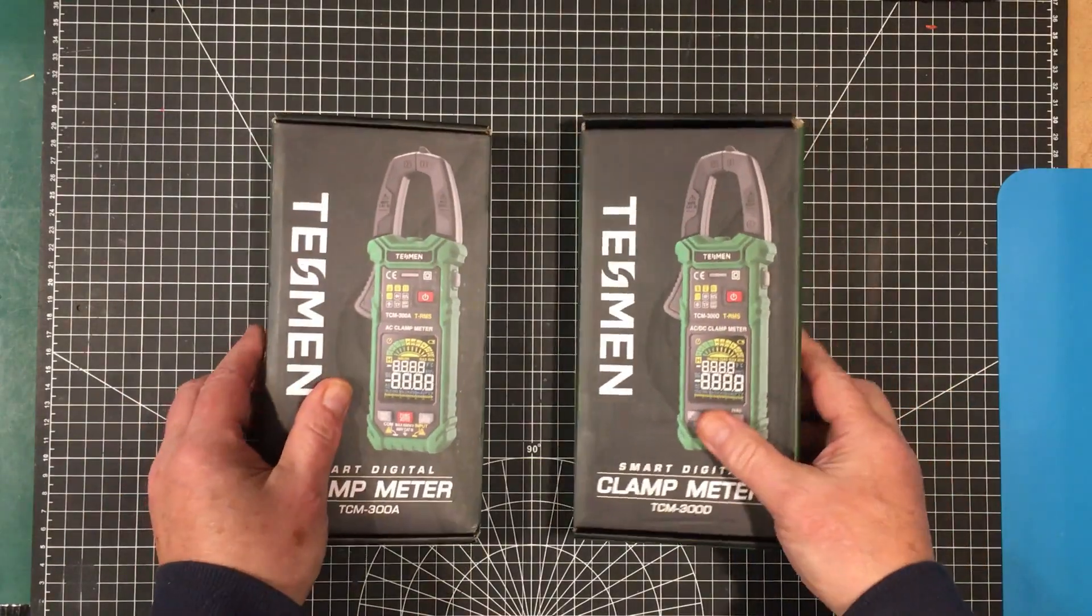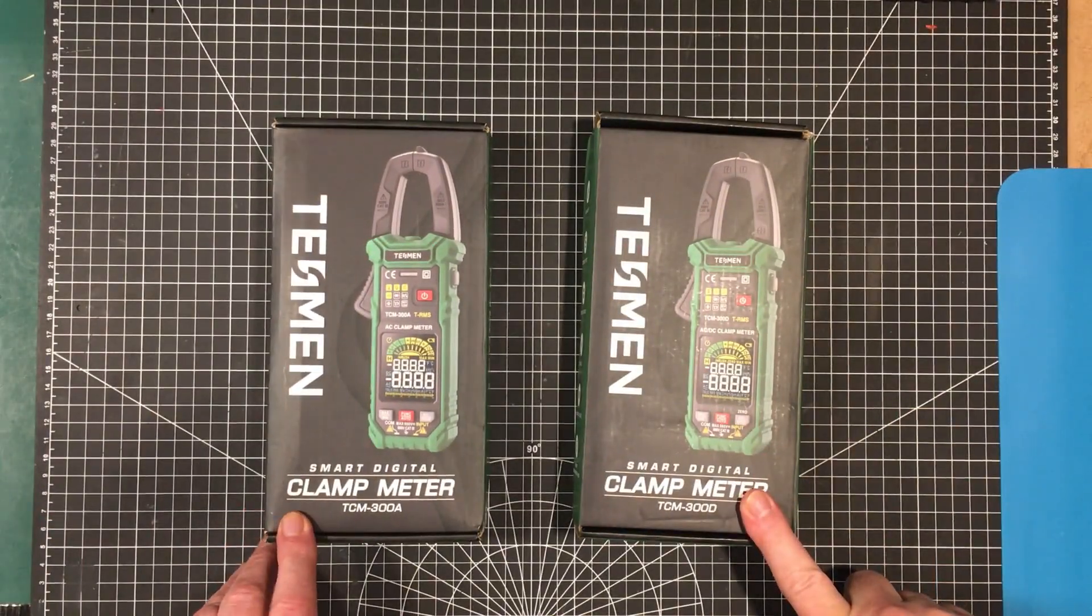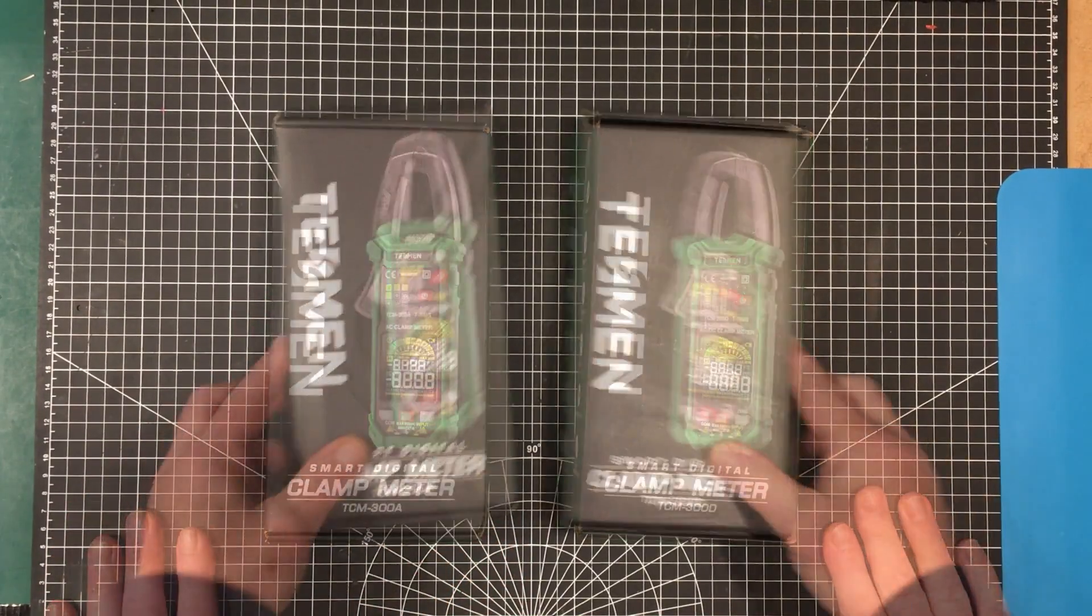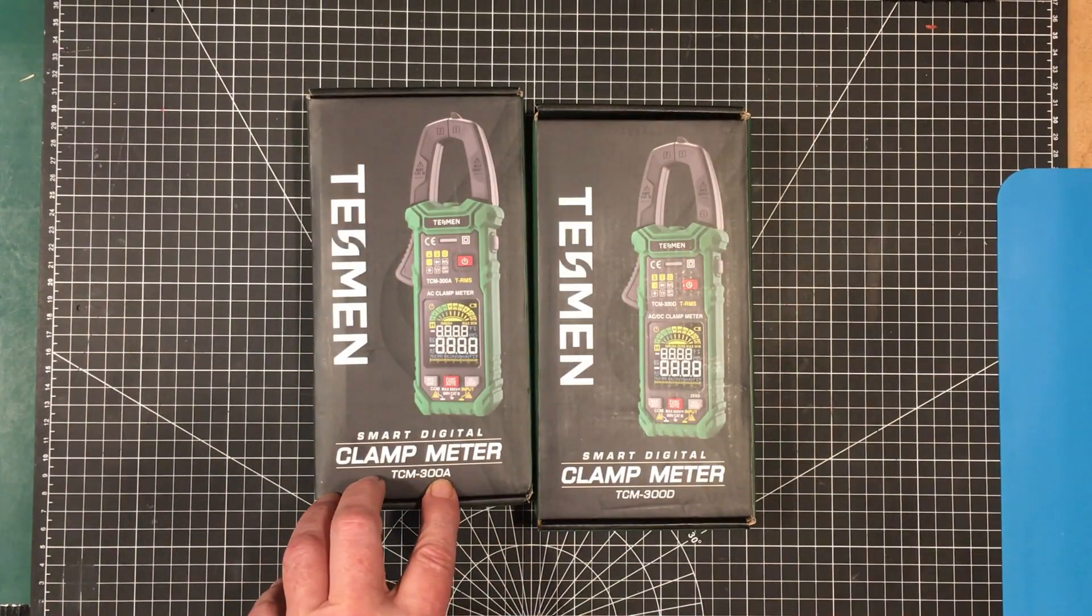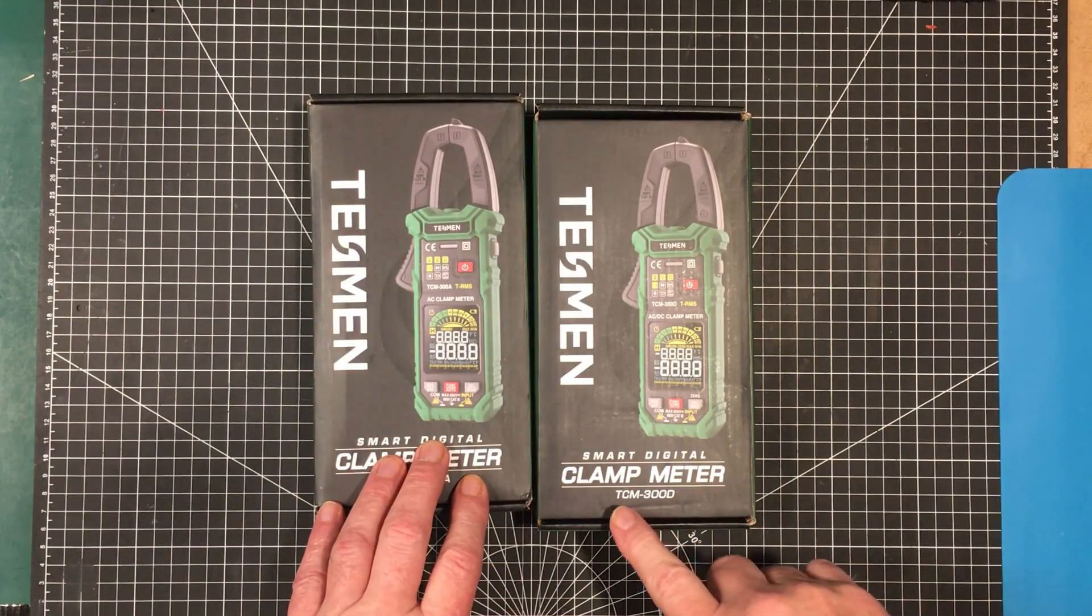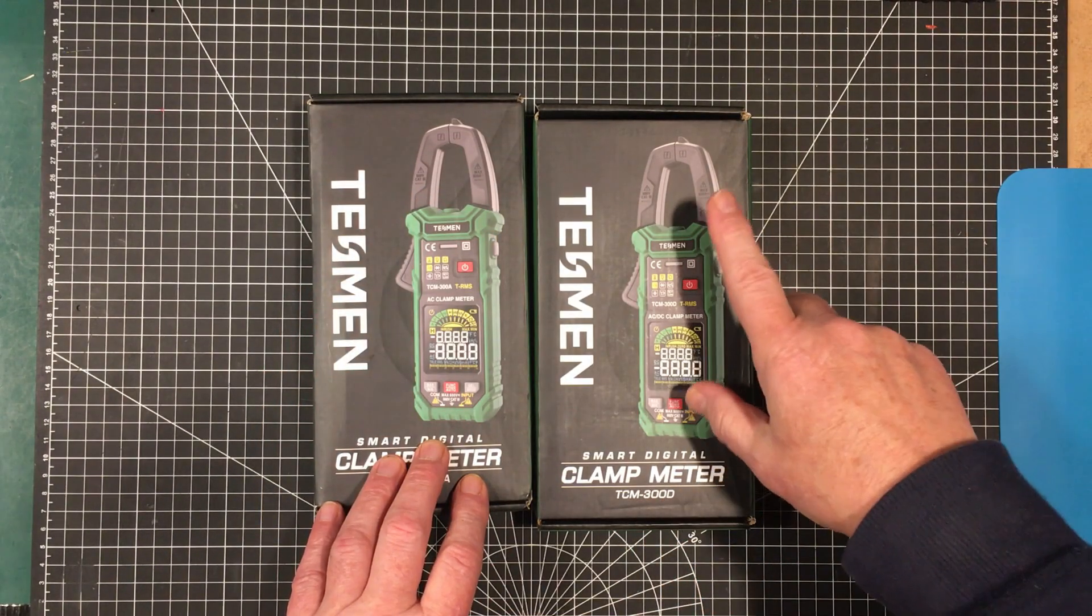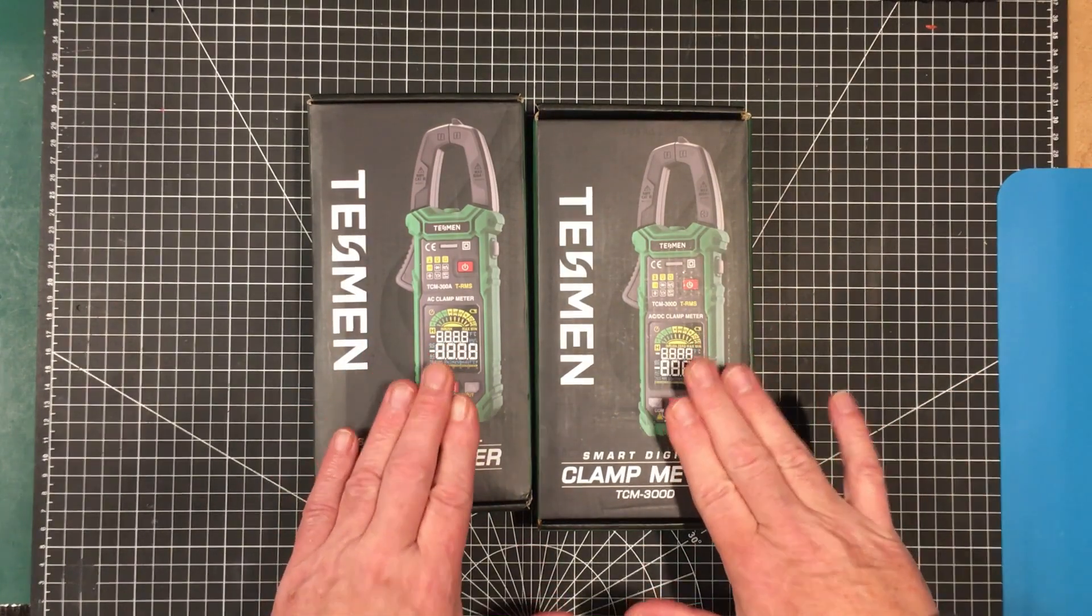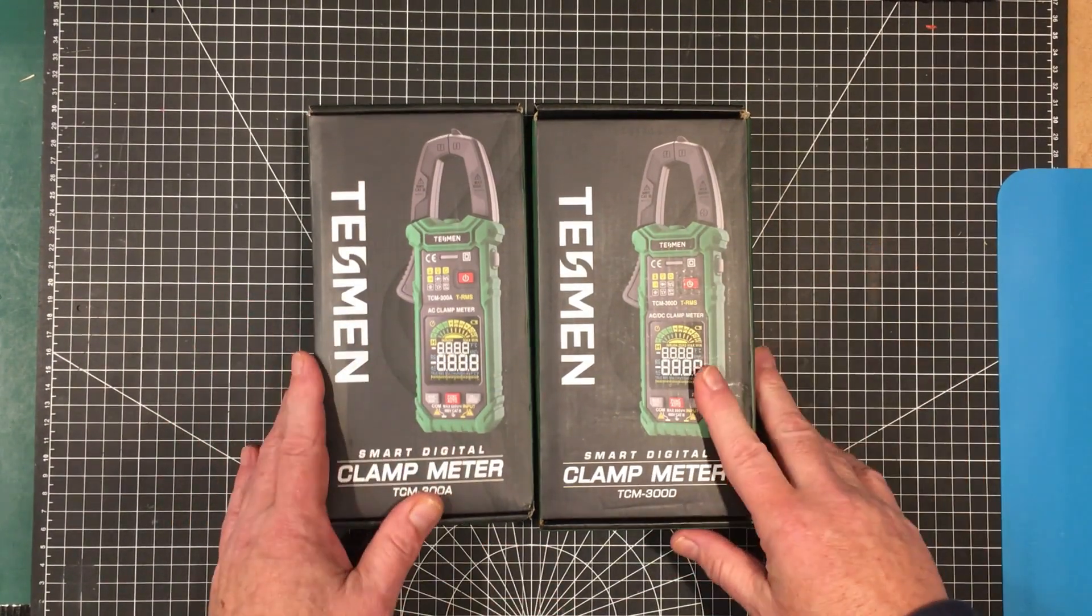Welcome back to the channel guys. The mailman just dropped off a couple of clamp meters from our buddies over at Tessman. This is a TCM 300A which I believe is an AC only clamp and the TCM 300D which is an AC DC clamp, but other than that these two smart meters are exactly the same.